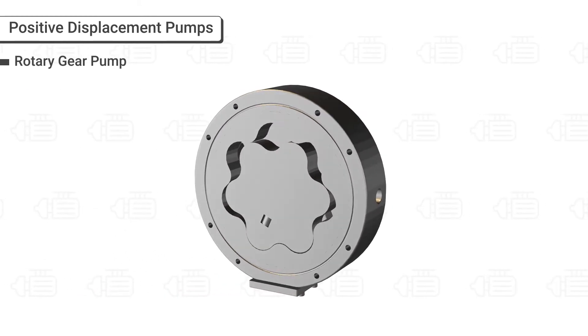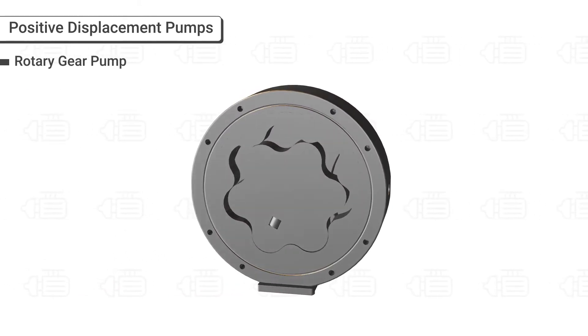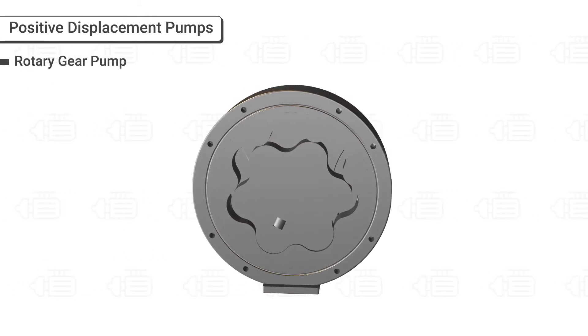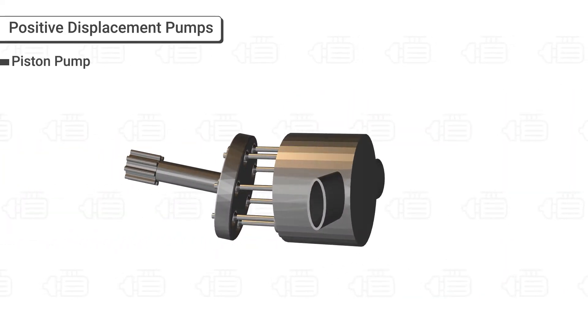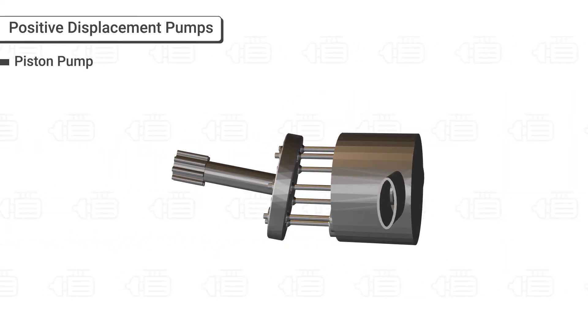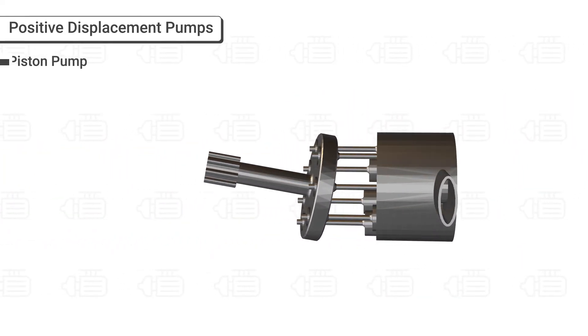The Rotary Gear Pump employs a rotor and idler gear assembly to generate its flow. The Piston Pump uses reciprocating pistons to move the fluid.